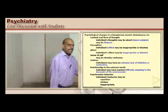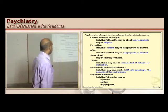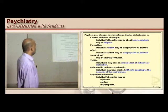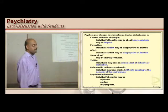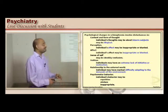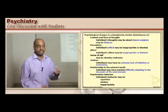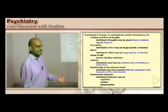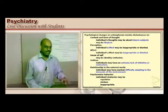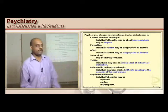The psychopathological changes seen in a patient of schizophrenia: number one, the problems with the content and the form of thought. The individual's thought will be about bizarre subjects and in an illogical manner. Content and form of thought are primarily disturbed in schizophrenia. A favorite examiner question is: schizophrenia is a problem with what? It is not with the mood — it is with the content of the thought.